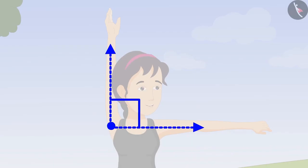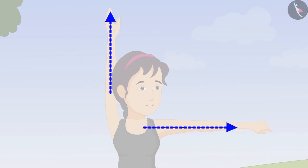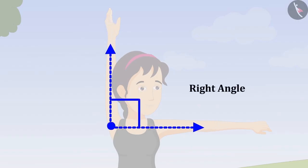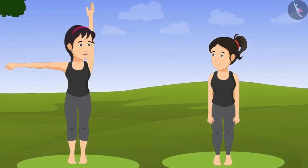Oh yes. But Didi, why did you make only this angle? This is a special angle. Every angle is either more or less than this angle, but the measure of this angle will always remain the same. This is called a right angle. When a vertical line joins a horizontal line, a right angle is formed between them.